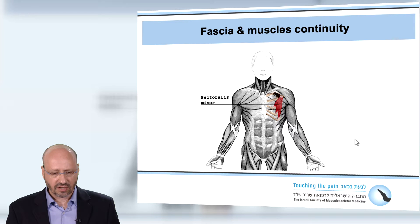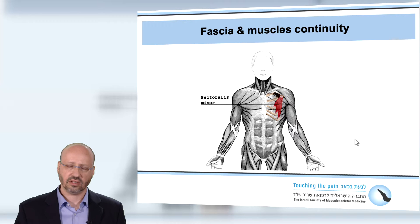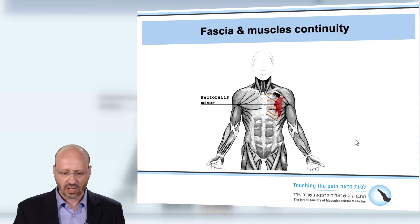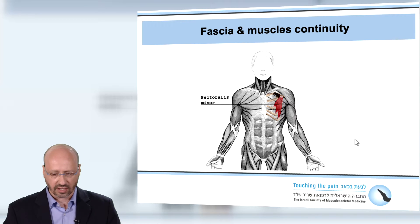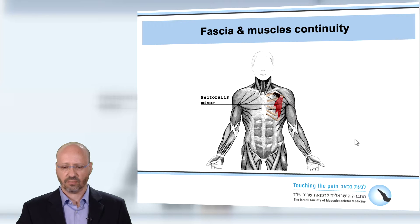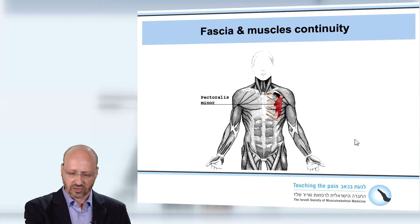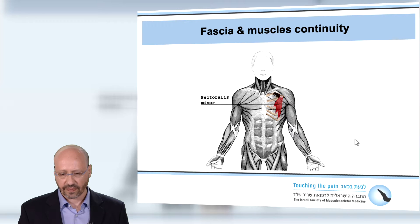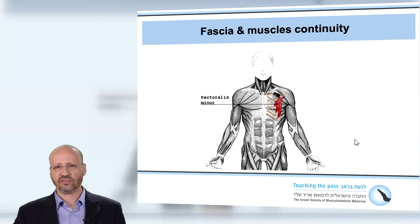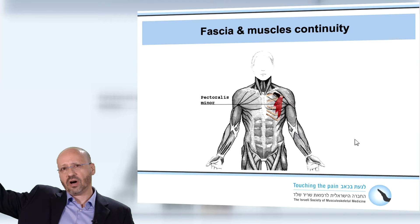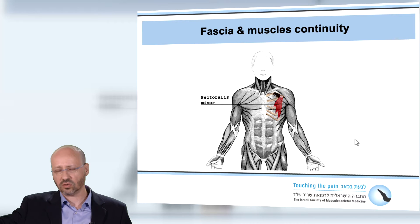Another example: if we take the pectoralis minor, we used to look at it as a single part separated from the rest — its origin at the coracoid process of the scapula and its insertion going down to the ribs. But if you look at it as a continuity of fascia, we can find a train that begins in the hand, in the flexor muscles of the hand, goes up to the biceps brachii short head, goes to the coracoid process, then the pectoralis minor, which is attached to the abdominal muscles, and ends at the pubic bone.